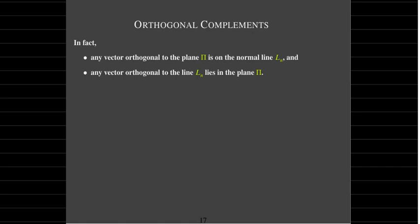An orthogonal complement is a subspace itself. It completes — it's what's needed to complete the other subspace to make all of Rn. In this case, the plane pi needs the normal line to complete all of R3. And yes, those two subspaces — the line and the plane — are examples of orthogonal complements.